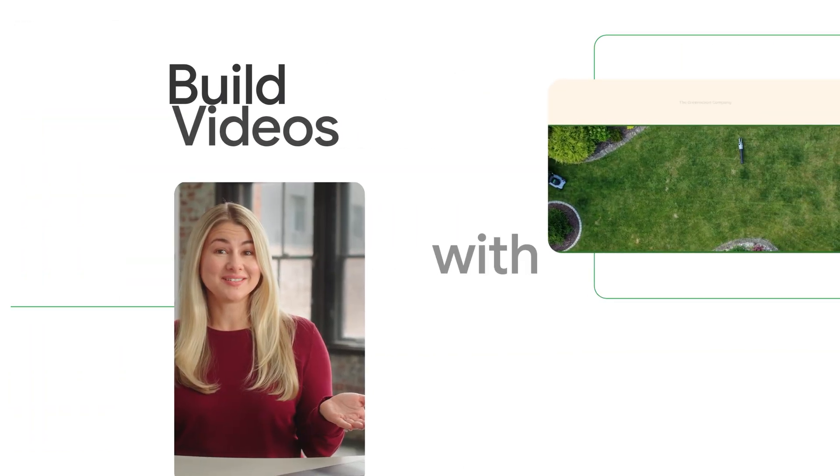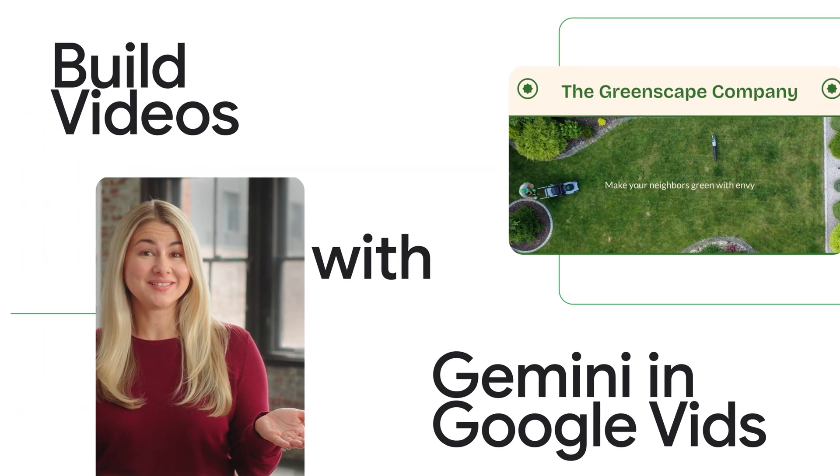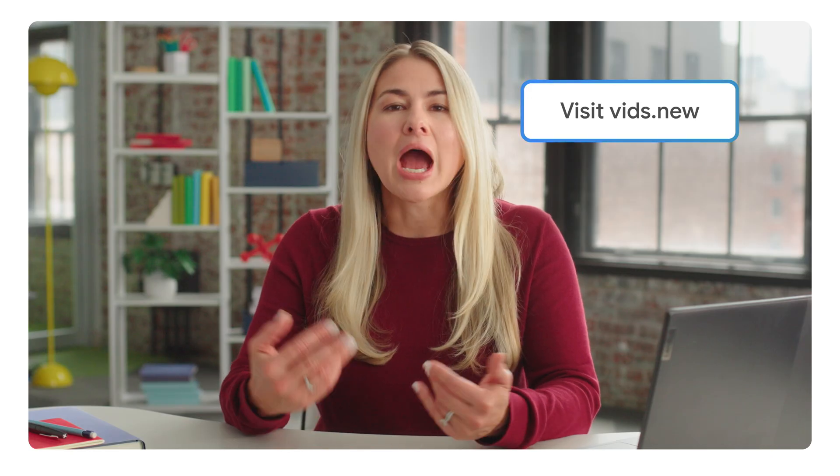With Google Vids, you can quickly transform existing content into a slick video. Let's say we're a landscaping business. Gemini and Google Vids can help you create an initial storyboard — think of these as the outline of your soon-to-be-created video. Google Vids' AI-powered features are available if you are on a Workspace Business or Enterprise plan, or a Google AI Pro subscriber.